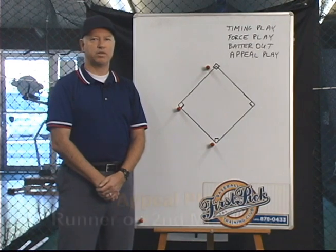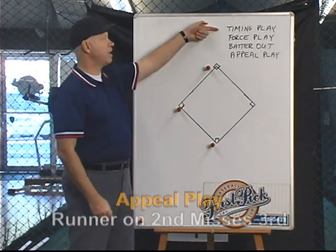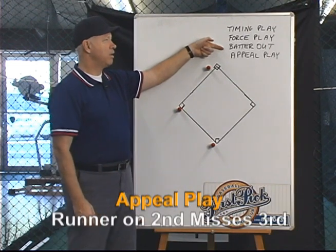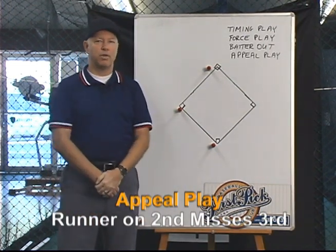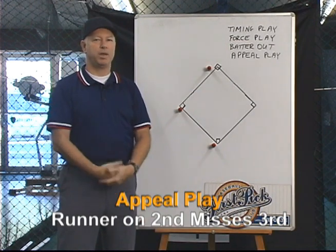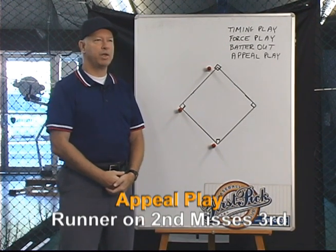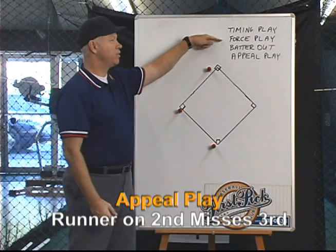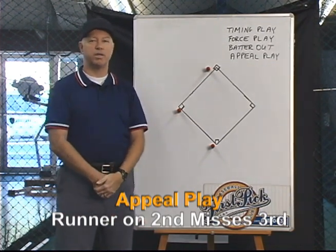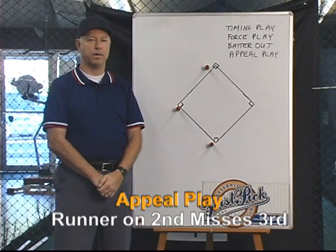Now that we've established that the third out can be the result of either a timing play, a forced play, or the batter out before he reaches first, we get into the complicated situations where there could be an appeal play. The result of that appeal could be any one of those three things, and you have to decide which one it is before you can decide if the run scores or not.